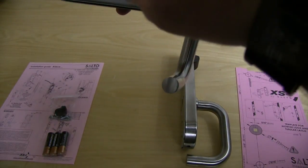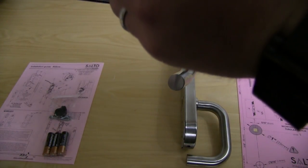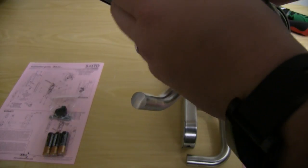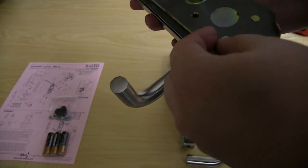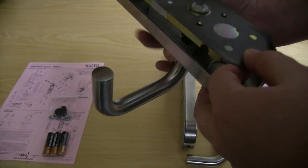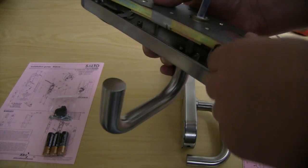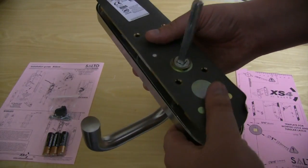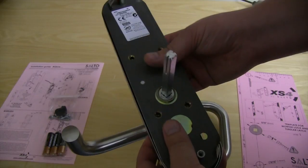Once the door handle is facing downward in the direction you want, reinsert the internal bolt and allow the parts to click back together.